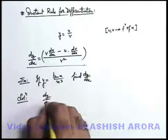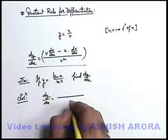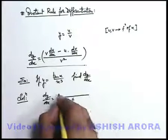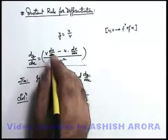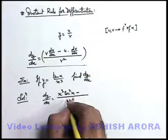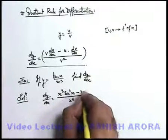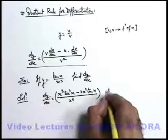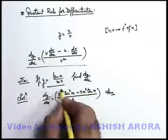So here d-y by d-x can be given as: in the denominator, I keep the square of the denominator, that is x to the power six. In the numerator, I keep x cube as it is and differentiate tan x — that is v times d-u by d-x — which gives sec square x, minus I keep tan x as it is and differentiate x cube, giving three x square times tan x. This is the answer for differentiating tan x upon x cube.